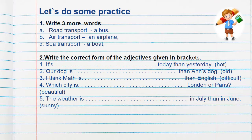Find the correct form of the adjectives given in the brackets. These are comparative degree, you can see. For one-syllable adjectives, add -er. For two-syllable adjectives, place 'more' before the adjective — example: more difficult. Example one syllable: hot, hotter than.